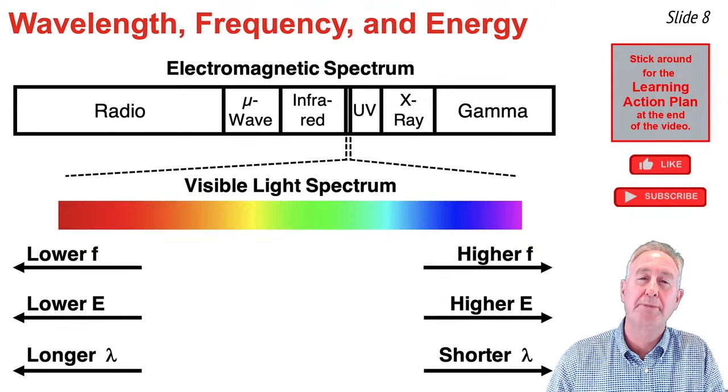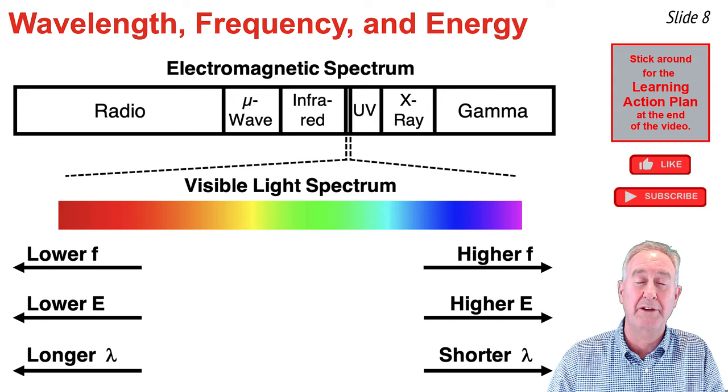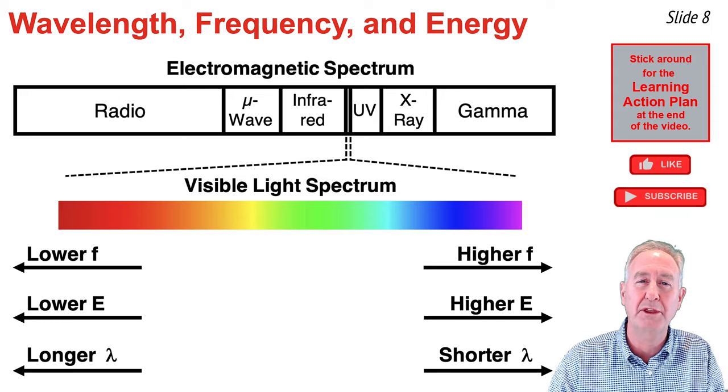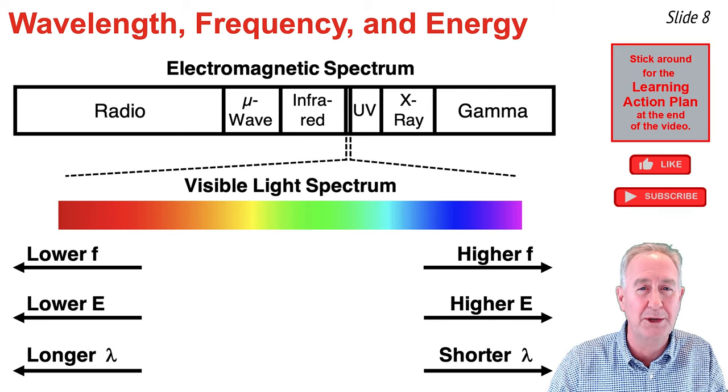To review, the electromagnetic spectrum consists of regions. The radio wave region on the left is the region with the longest wavelength waves and the lowest frequency and energy waves.